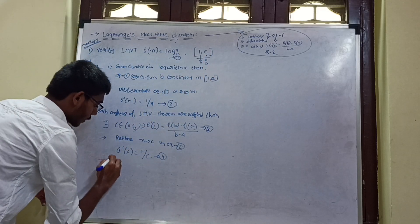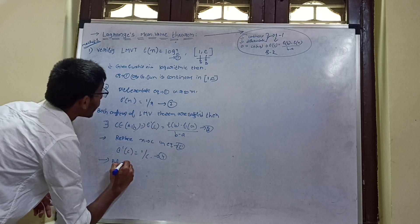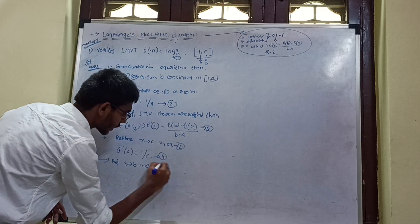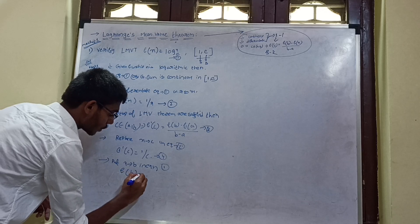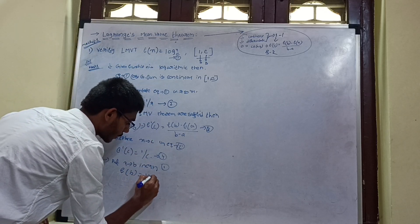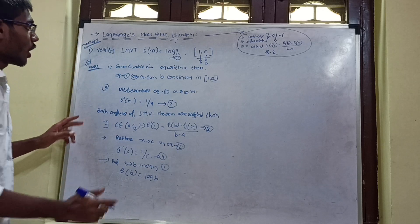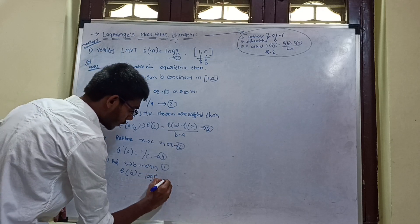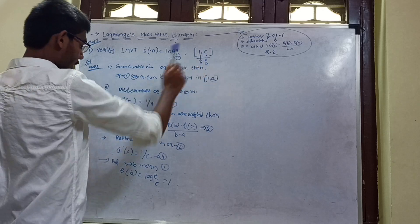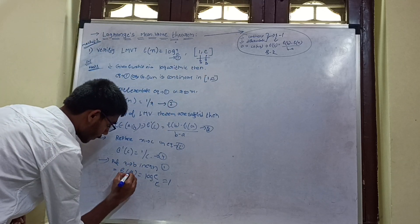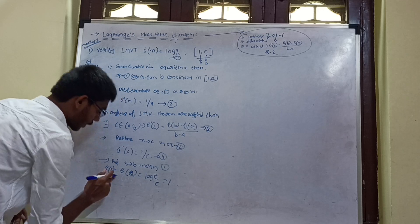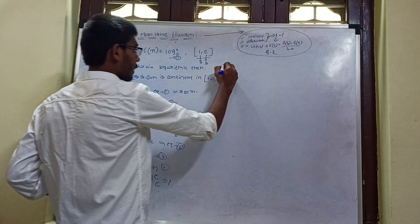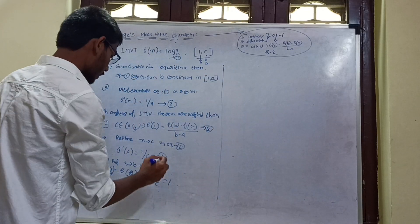Next, find f(b). Substitute x = b (which is e) into equation 1. So f(b) = log(e) with base e = 1. Put this as equation 5.